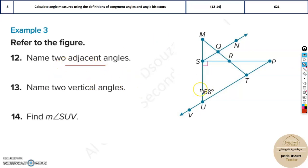Adjacent means next to or nearby. So now say for example you're considering this particular angle MQS. The adjacent angle would be next to it, say MQN.